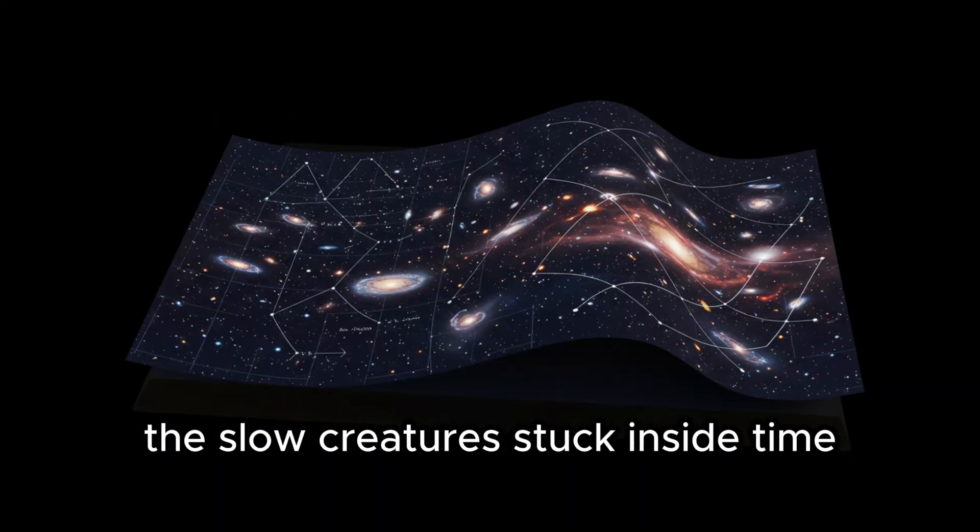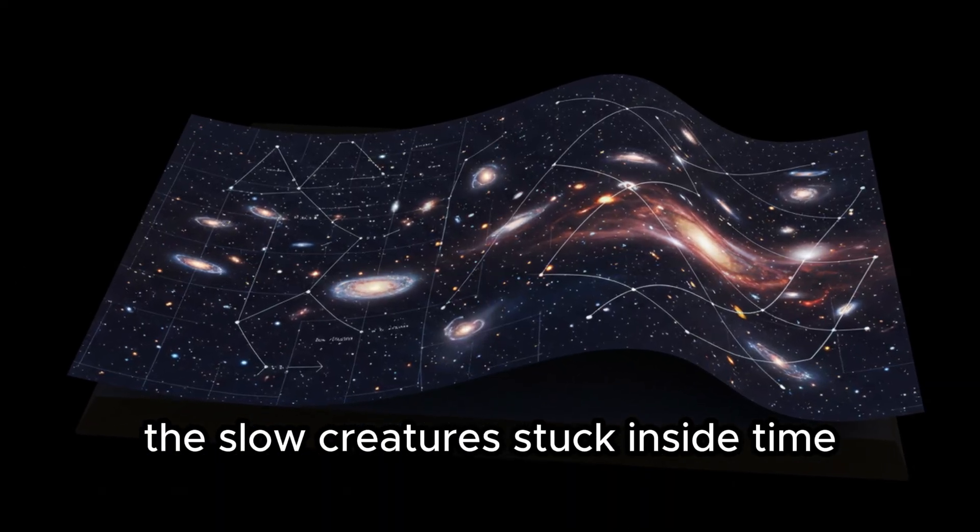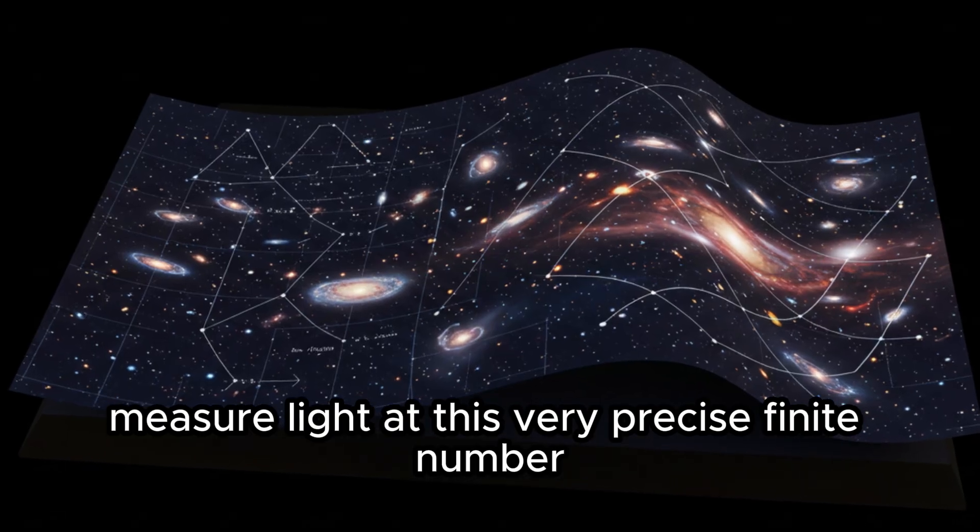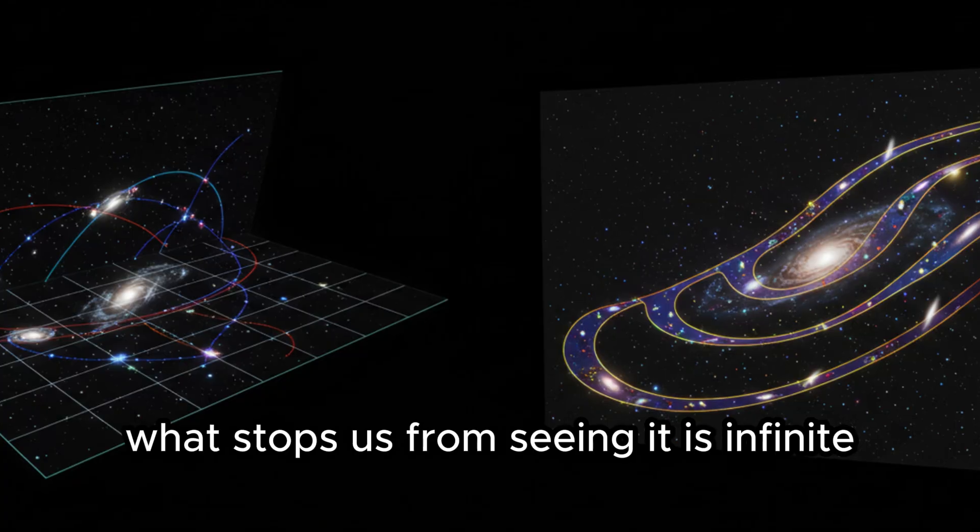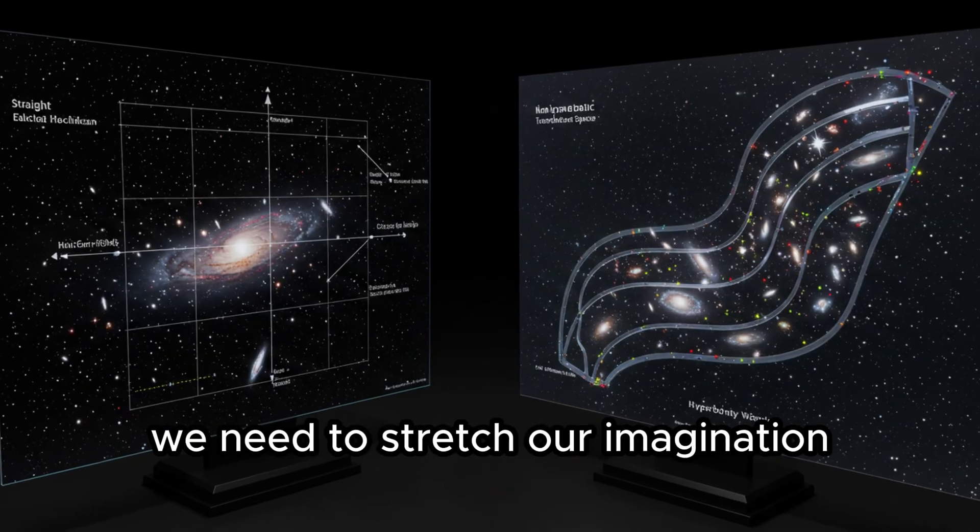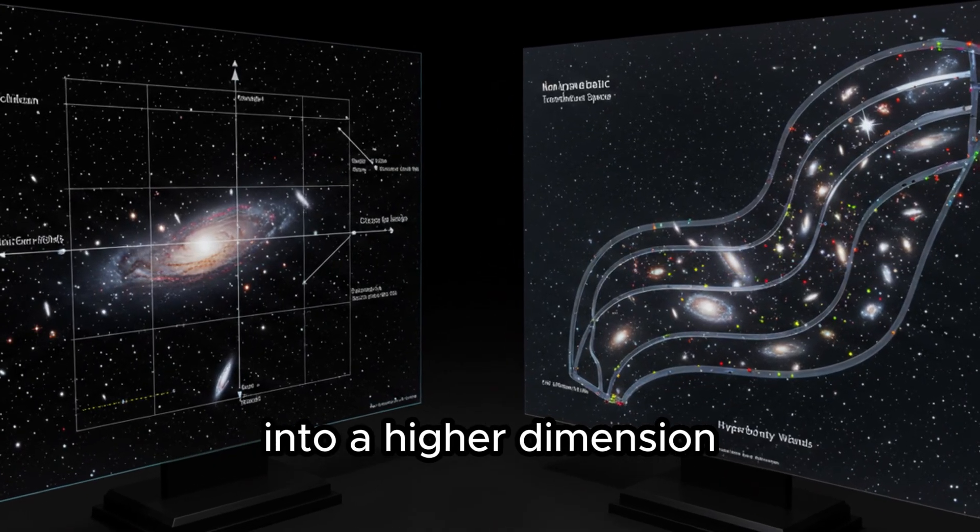So why do we, the slow creatures stuck inside time, measure light at this very precise, finite number? What stops us from seeing it as infinite? To understand what's happening, we need to stretch our imagination into a higher dimension.